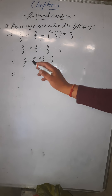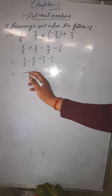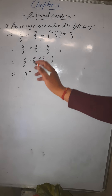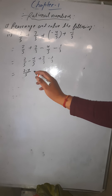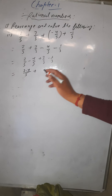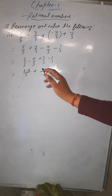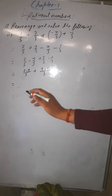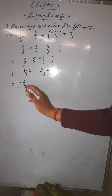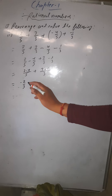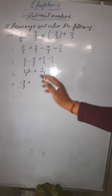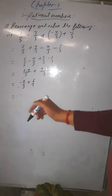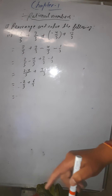For 2/5 minus 4/5: same denominator, so LCM is 5. The numerator is 2 minus 4, which gives minus 2/5. For 7/3 minus 1/3: same denominator, LCM is 3. The numerator is 7 minus 1, which gives 6/3.